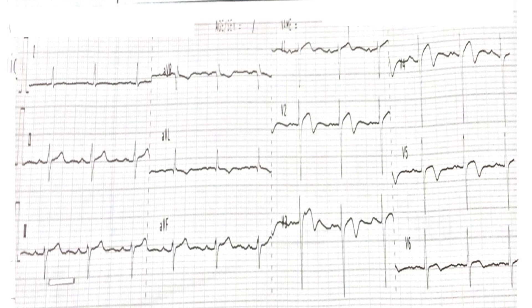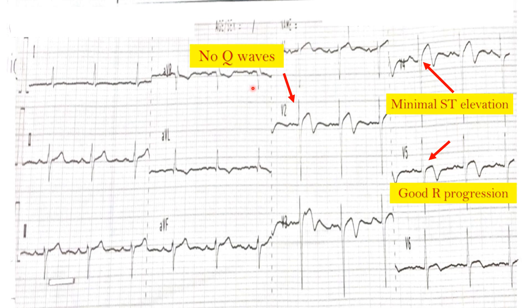Applying this to our ECG: there are no Q waves in leads I, V2, V3, V4, V5, or V6. There is no ST elevation to suggest anterior wall MI — only very minimal ST elevation that does not meet the criteria; this is more of a J-point uptake. The R wave progression is good and healthy. Our ECG meets all three criteria — this is classical Wellens Syndrome with biphasic T waves.